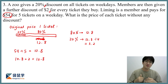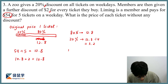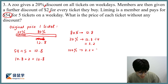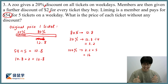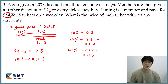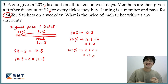If 20% is 3.2, then 100% is simply 3.2 times 5, which gives us 16. That's the final answer — the original price of one ticket is $16.